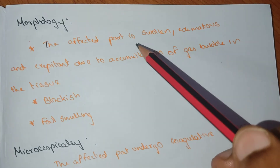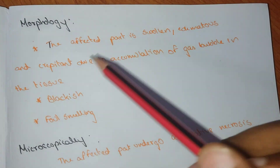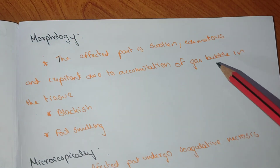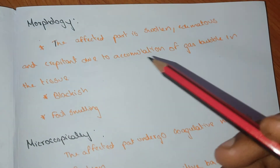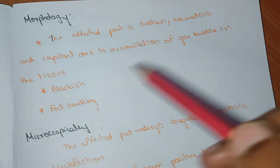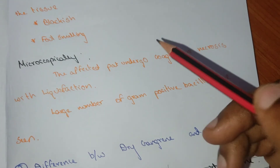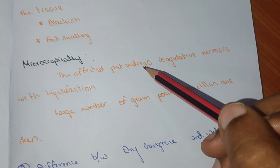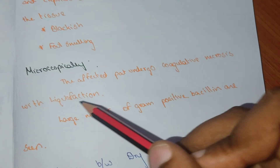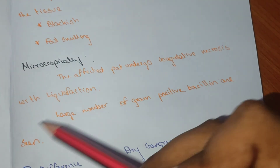Morphology of gas gangrene: the affected part is swollen, edematous, and crepitant due to accumulation of gas bubbles in the tissue. It appears blackish in color and is foul smelling. Microscopically, the affected part undergoes coagulative necrosis with liquefaction, and large numbers of gram-positive bacilli are seen.